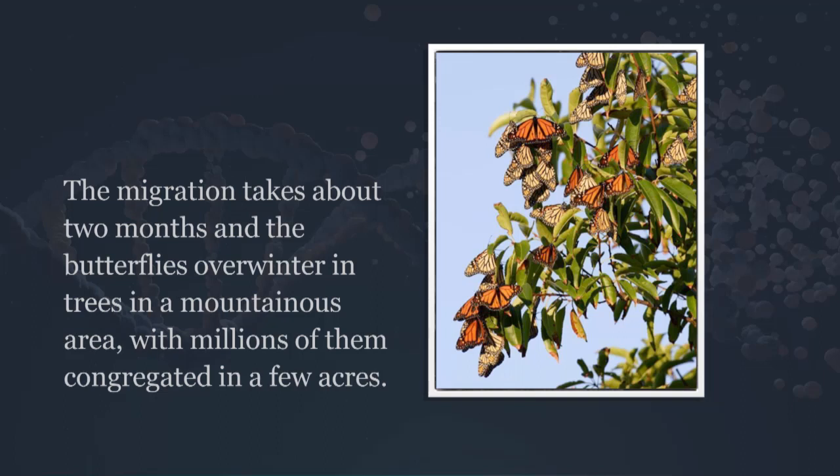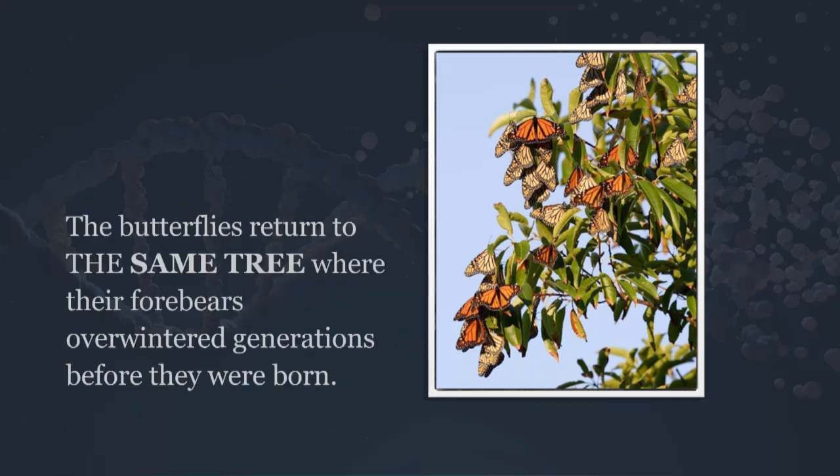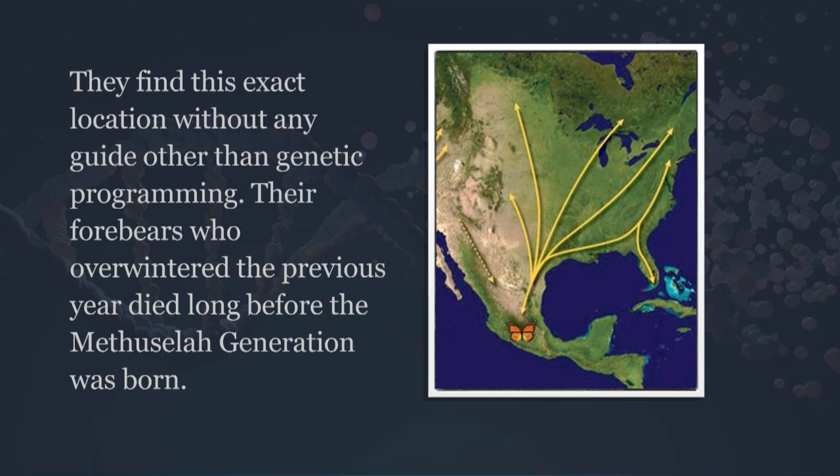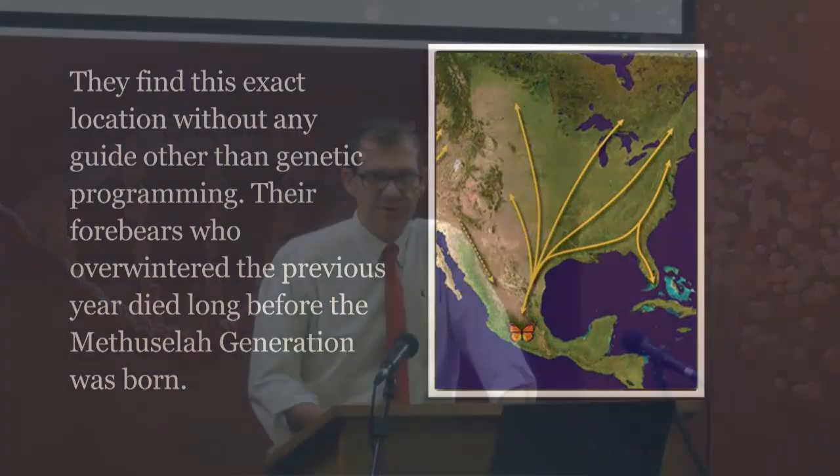They return to the same tree where their forebears overwintered generations before they were born — finding this exact location without any guide other than genetic programming. Their forebears who overwintered the previous year died long before the Methuselah generation was born. There's no great-great-great-grandfather to sit down with baby monarch and say, 'Now here's what you do.' It's just all programmed by God into the DNA.